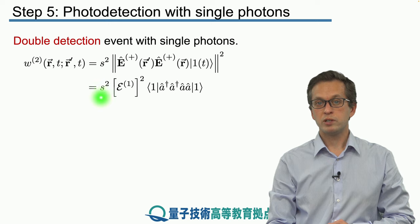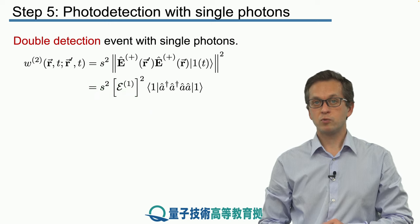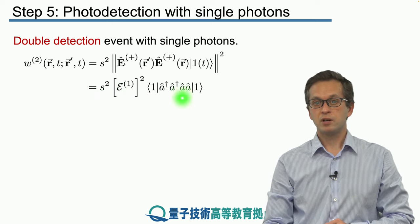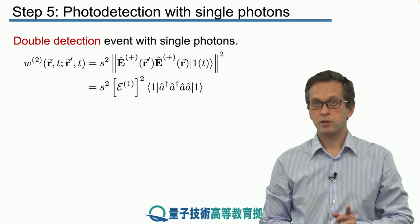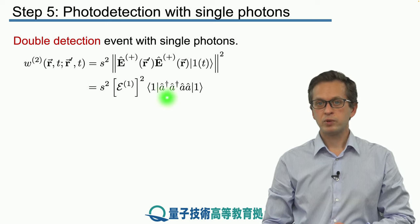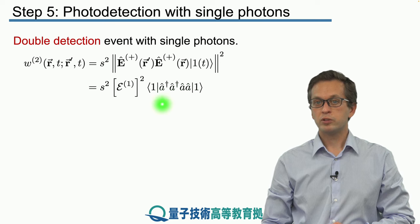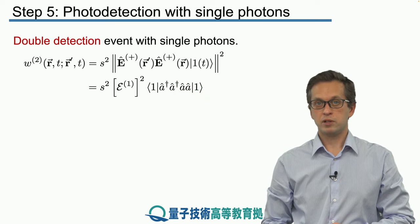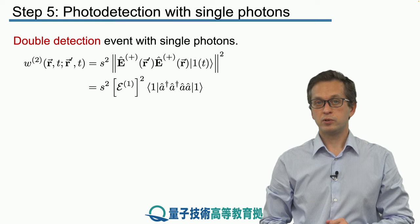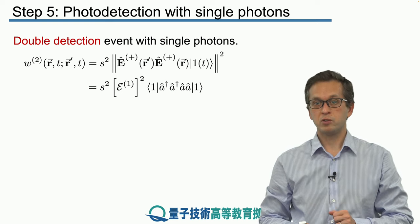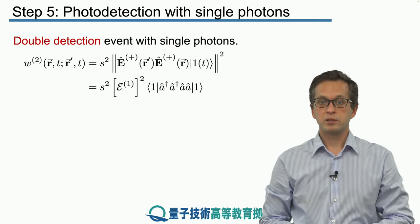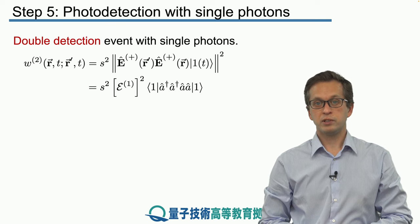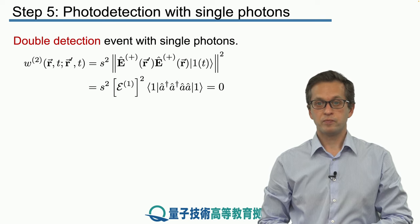We get that w2 is equal to s squared times the one photon amplitude squared times this average of this long operator, a dagger times a dagger times a times a. And we average with respect to the one photon state. But we can see that we are operating here with two a's on our one photon state. So the first a annihilates one photon in our field brings us to vacuum. And then we apply the annihilation operator again, which gives us zero. So in other words, the rate of double photo detection is equal to zero.